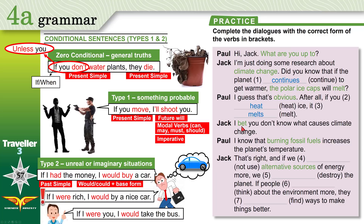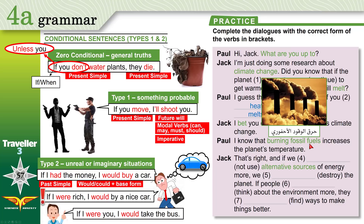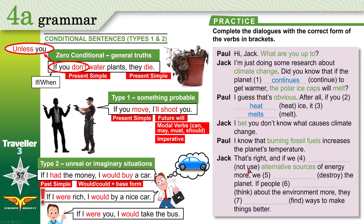'I bet you don't know what causes climate change.' 'I know that burning fossil fuels — like petrol and gas — increases the planet's temperature.' 'That's right. And if we don't use alternative sources of energy — we need to use alternatives like electricity or solar power instead — we will destroy the planet.' This is something probable, conditional type 1: if we present simple don't use alternative sources of energy, we will destroy the planet.